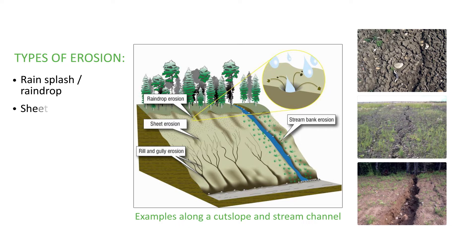Sheet erosion: the overland and uniform flow of water transports soil particles that have been dislodged by raindrops or by saturated surface flow. Rill erosion: runoff from sheet erosion merges into a single flow path and starts to cut into the soil to form a rill. Rills are typically orientated straight up and down a slope. If left unchecked, rills will become wider and deeper.